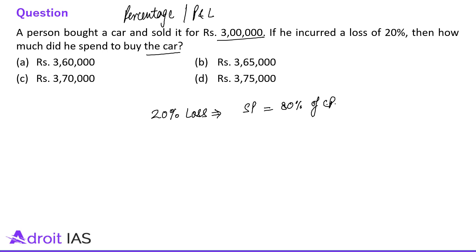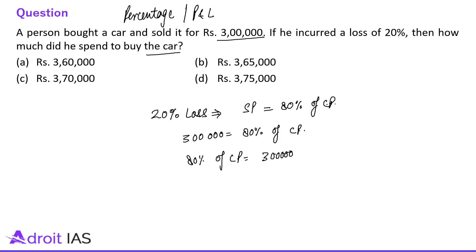SP equals 80% of CP, so 3 lakhs = 80% of CP. Therefore CP = 3 lakhs × (100/80) = 3 lakhs 75,000 rupees.